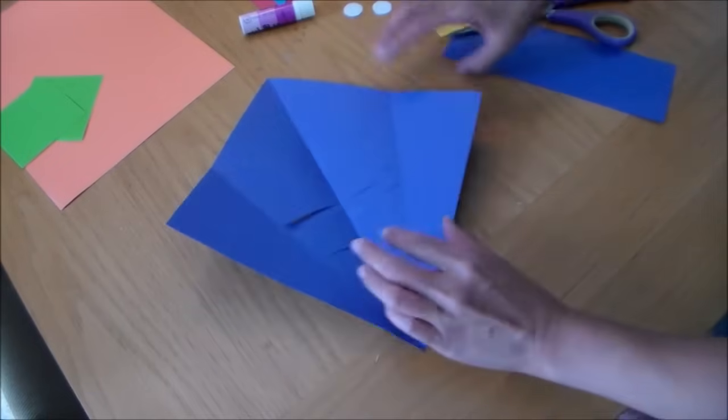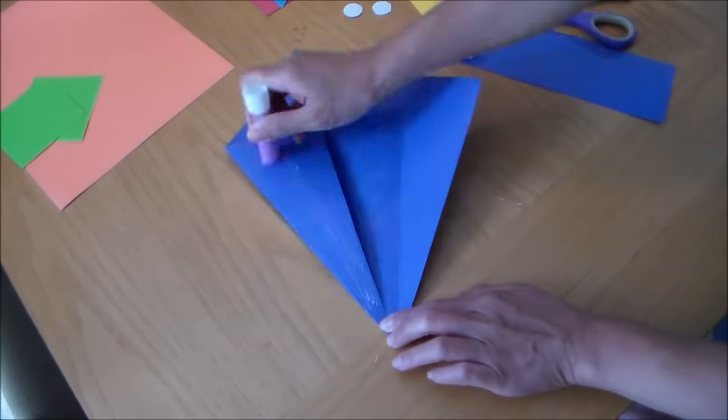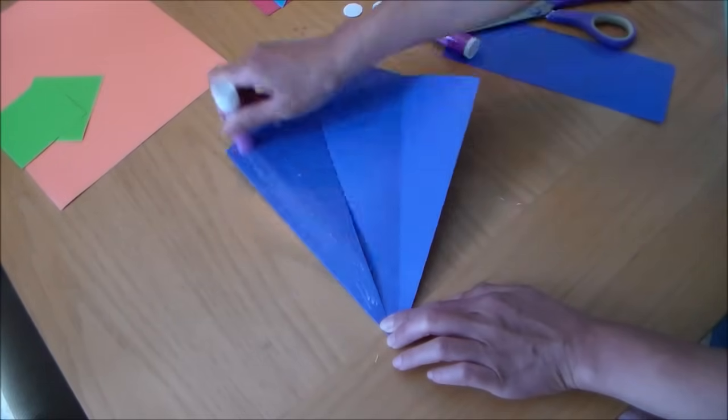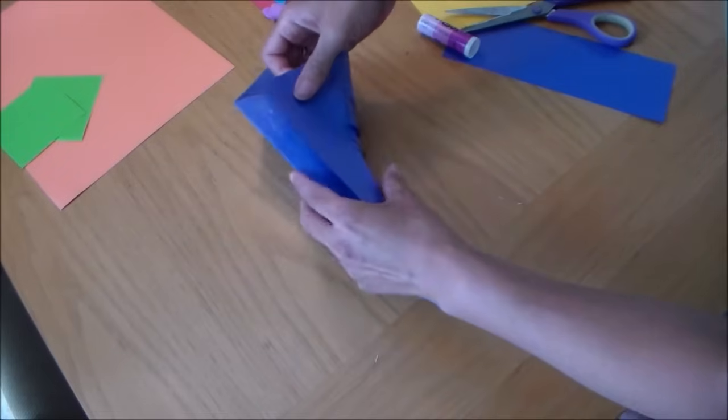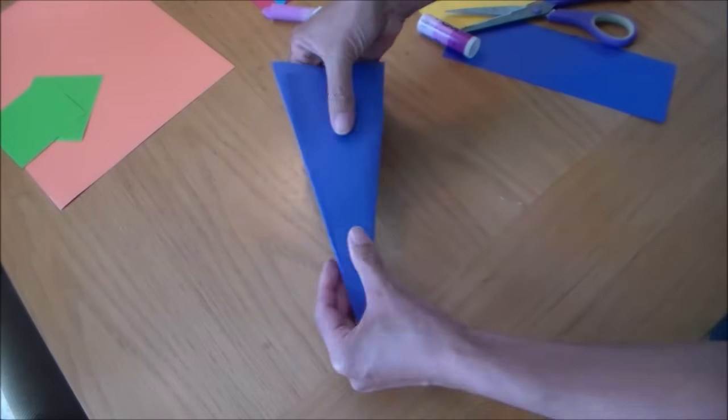Open up your paper. Now time to put together our fish. So put some glue on one side. Fold this side in. Line them up just like so.